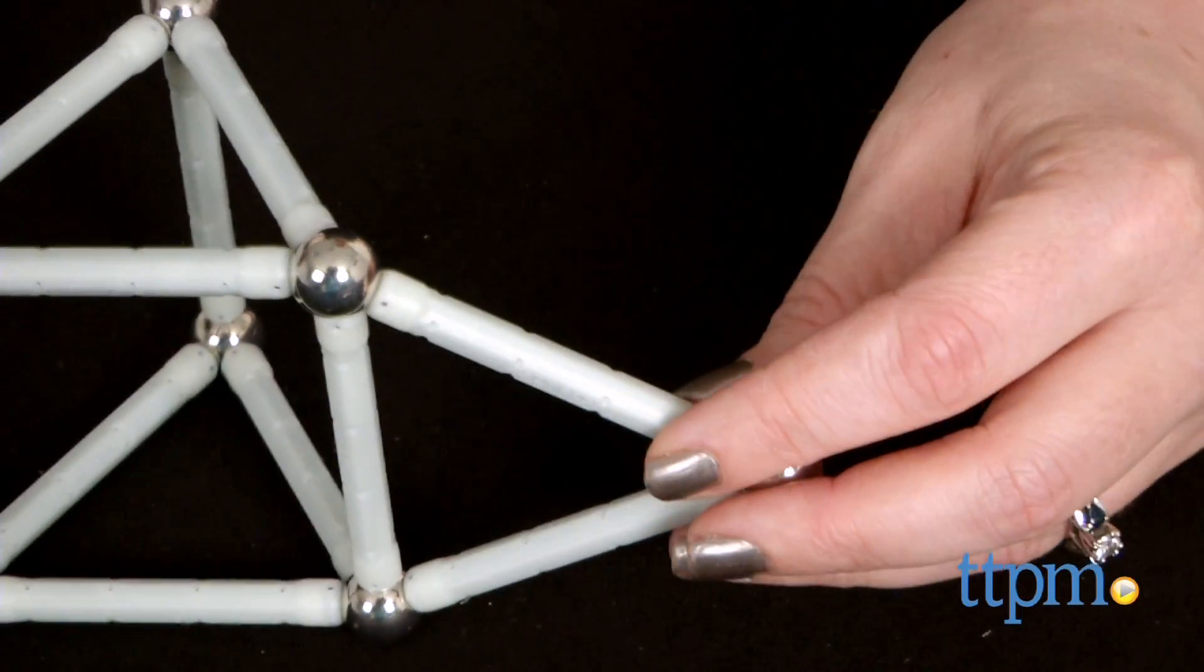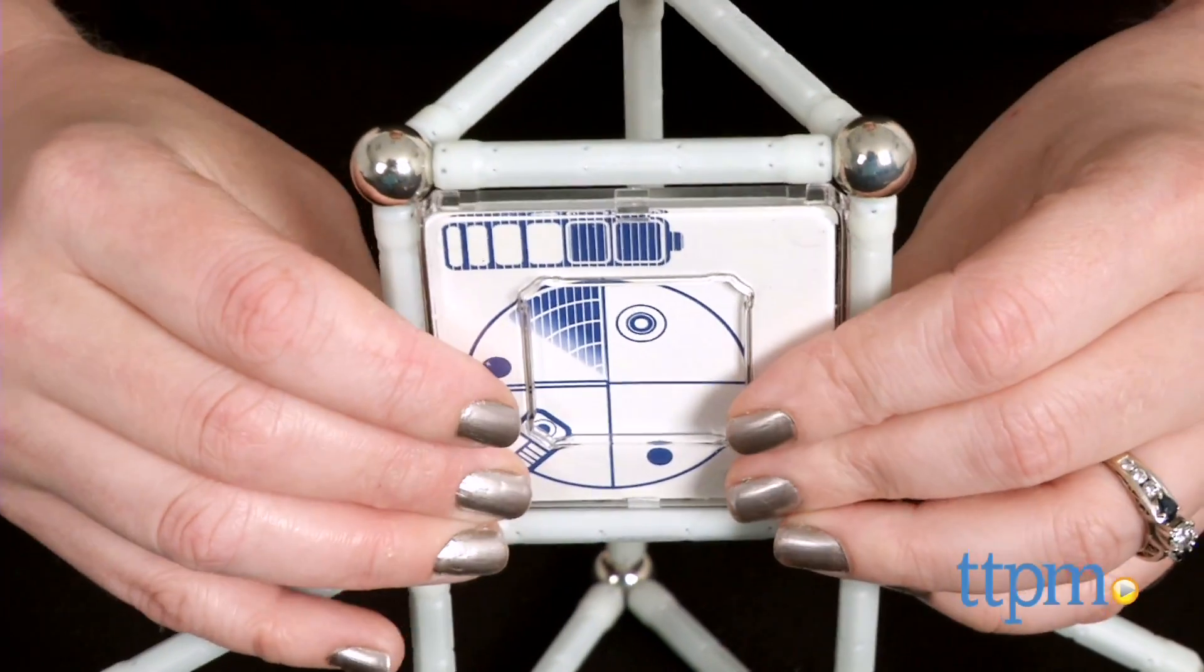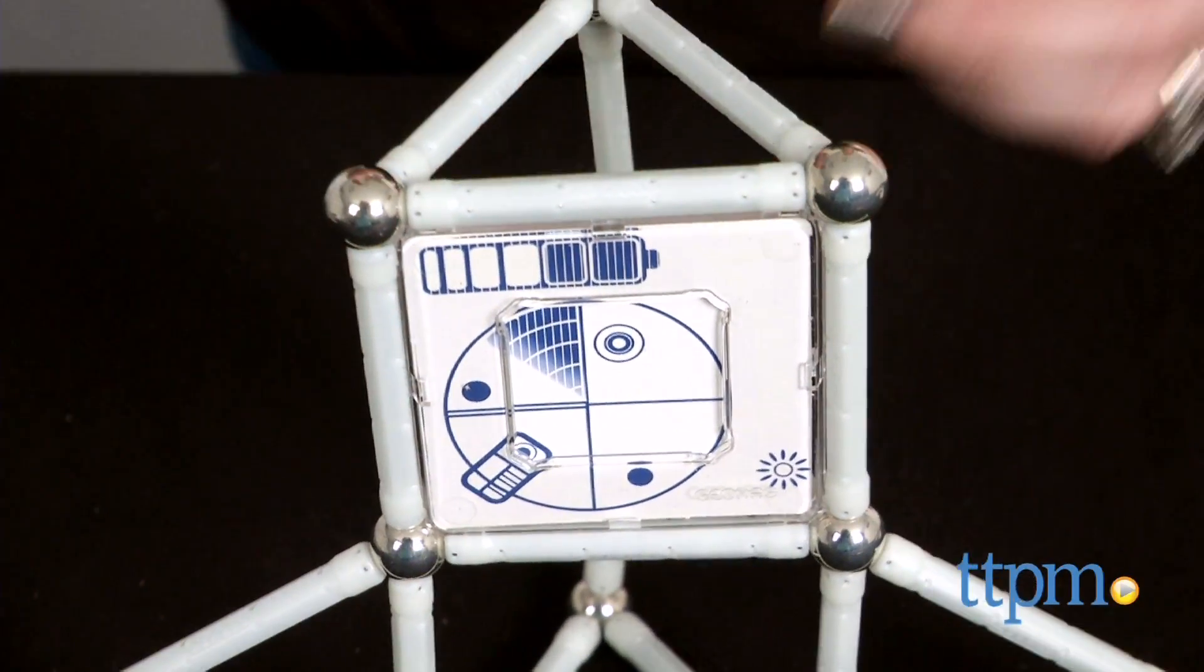For kids ages 6 and up who enjoy construction sets and are looking for a new way to build, building with the Geomag Glow Set is easy to do and looks cool when finished.